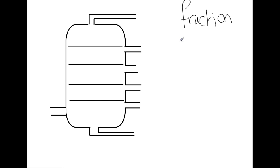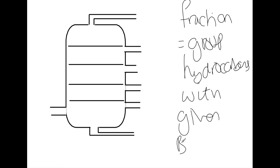A fraction of hydrocarbons is a group of hydrocarbons with a given boiling point range. We use a fractional distillation column to separate out the different mixture of hydrocarbons.